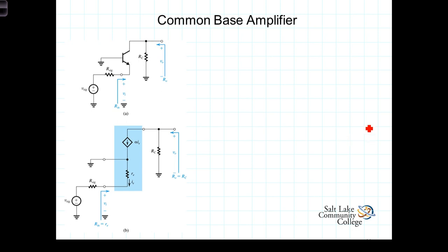Let's now take a look at the common base amplifier configuration. You'll notice that the base has been grounded, the signal is applied to the emitter, and we're representing the signal as V-signal in series with its source resistance.